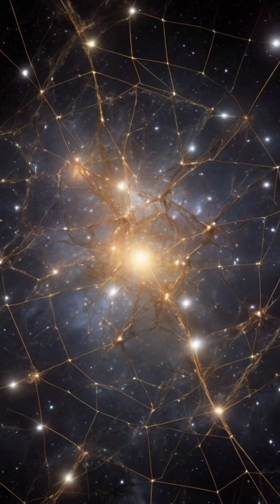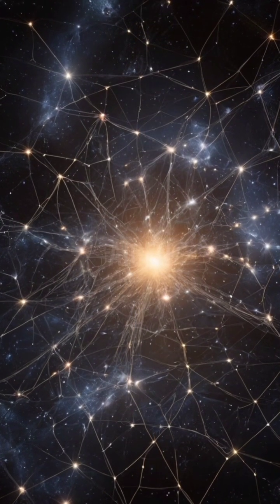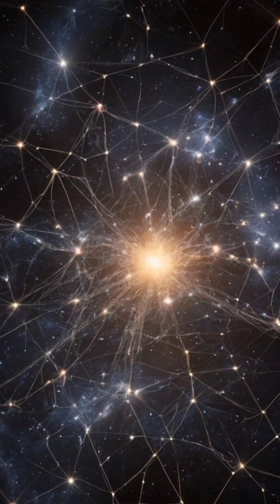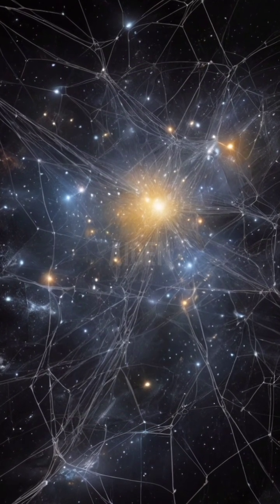From the bending of light around massive galaxy clusters, known as gravitational lensing, to the strange patterns in cosmic microwave background radiation, every clue points to dark matter shaping the universe.